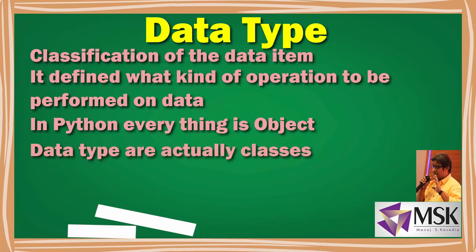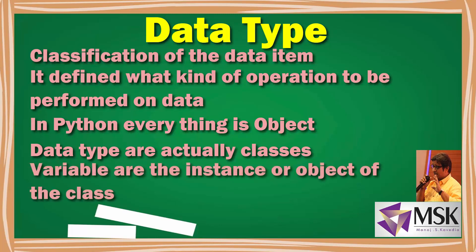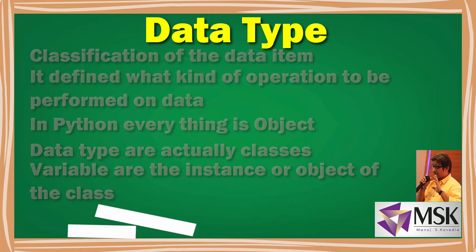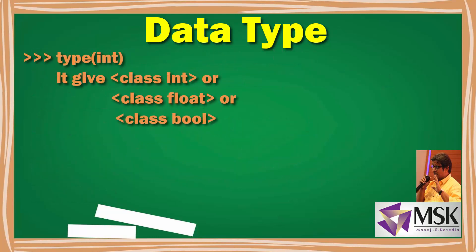Data types are actually classes, and variables are the instance objects of these classes. That's why when I call type() on something, it gives class integer, or class float, or class boolean. So in Python everything is objects, the data types are classes, and the variables are instances or objects of these classes.